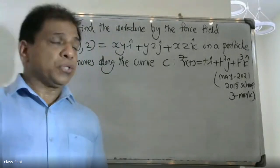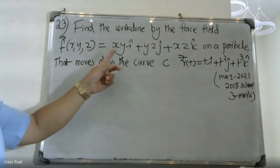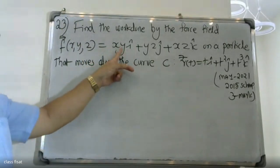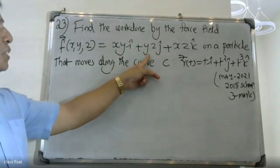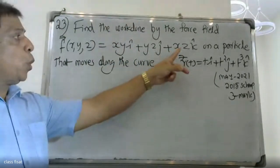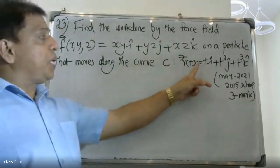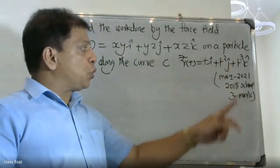Good morning, students. Here's today's university question. Find the work done by the force field F(x, y, z) = xy i + yz j + xz k on a particle that moves along the curve C, where r(t) = t i + t² j + t³ k.